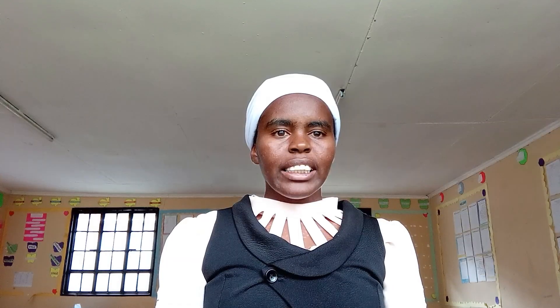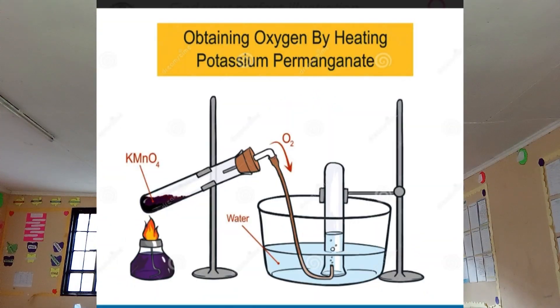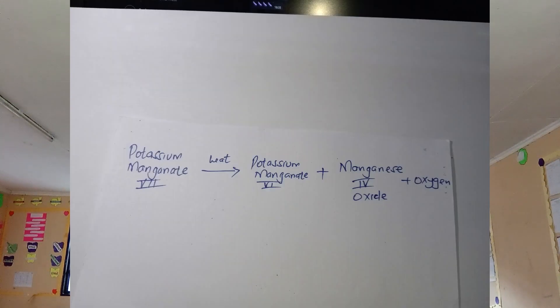Oxygen gas can also be prepared by heating potassium manganate-7, or potassium permanganate. When you decompose potassium permanganate, it decomposes to give potassium manganate-6, manganese 4-oxide, and oxygen gas.